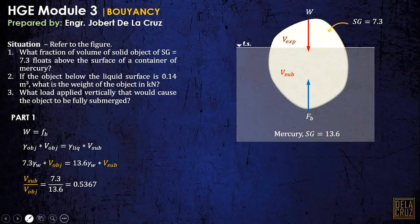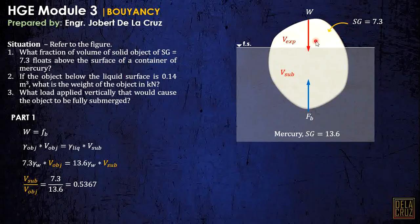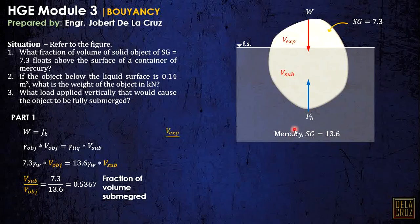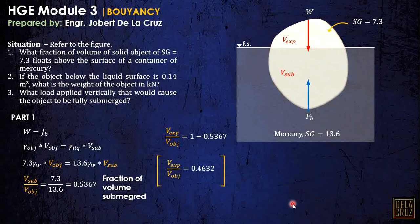The result is 0.5367 — in fraction form. But take note, what is asked in number one is the fraction of volume above the surface. So we calculate that by the complement: volume exposed / volume object = 1 − 0.5367. So this is the fraction of volume above the surface. For number two: if the volume of the object below the liquid surface is 0.14 cubic meters, what is the weight of the object in kilonewtons?